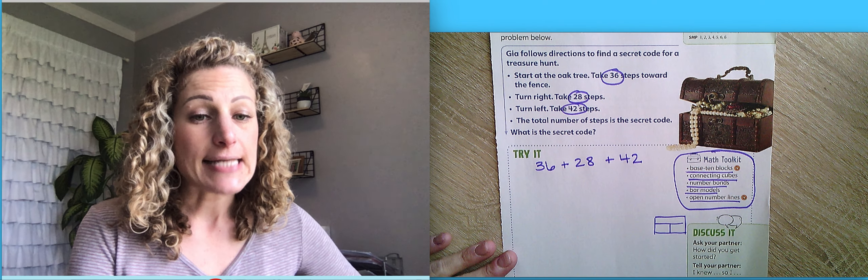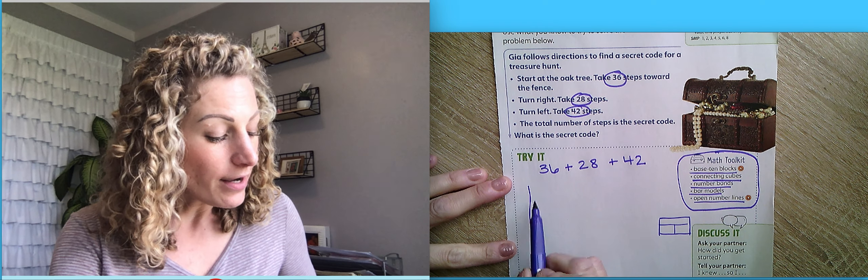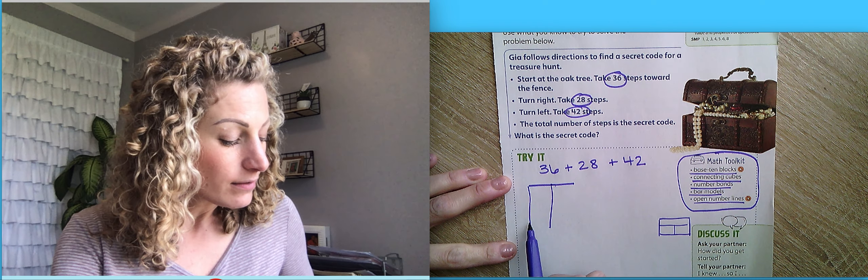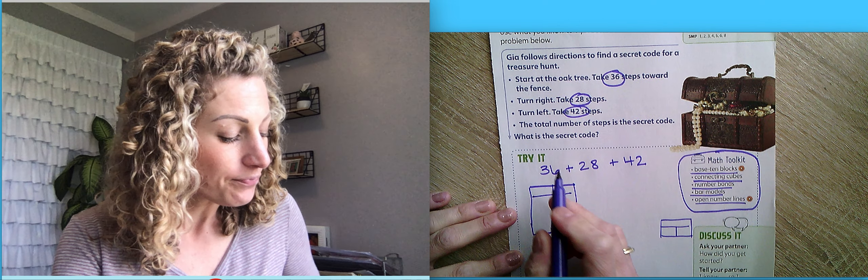Now, some of you might say, well, I'm going to add two of them and then I'm going to add the other number to that. But there's a much quicker way. I'm going to show you. There are two different ways our book shows us.